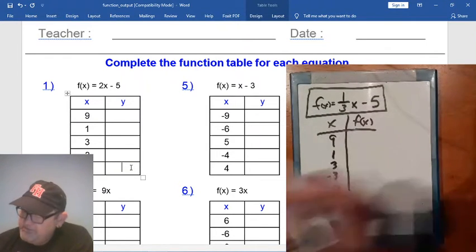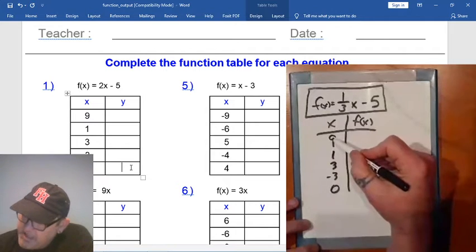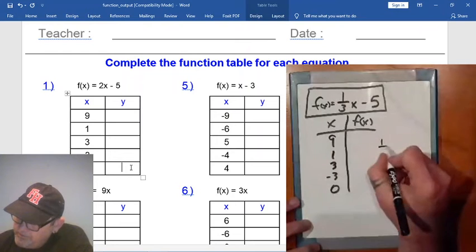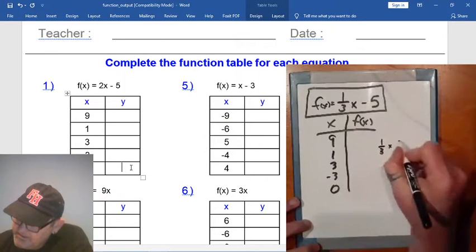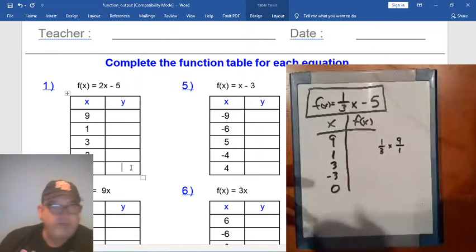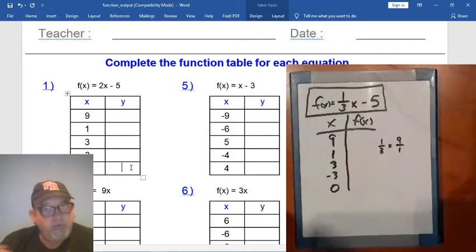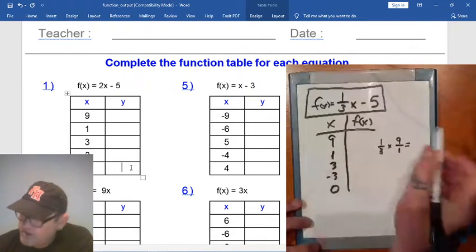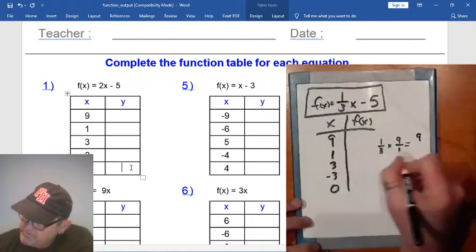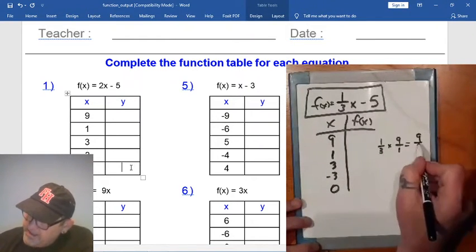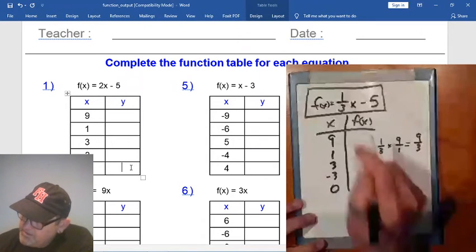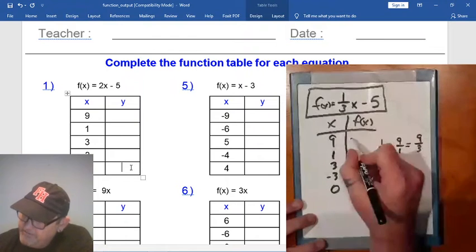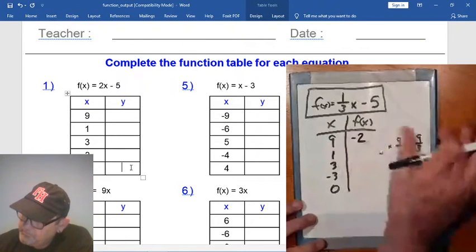So, again, let's do the same thing that we've done. So, we're going to replace 9 for x. So, what is 1 third times 9? Well, 1 third times 9, and we'll change that to a fraction. We'll go to 1 under it, so that way we can multiply. And then when you multiply fractions, you just multiply straight across. So, 1 times 9 is 9. 3 times 1 is 3. And 9 divided by 3 is 3. So, 1 third times 9 is 3. And 3 minus 5 is negative 2. Okay.